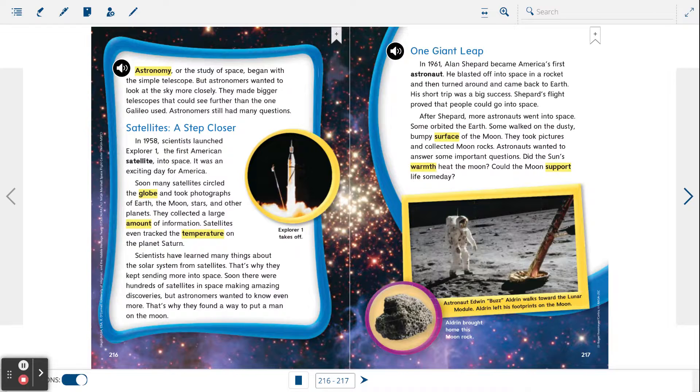Astronomy, or the study of space, began with the simple telescope. But astronomers wanted to look at the sky more closely. They made bigger telescopes that could see further than the one Galileo used. Astronomers still had many questions.